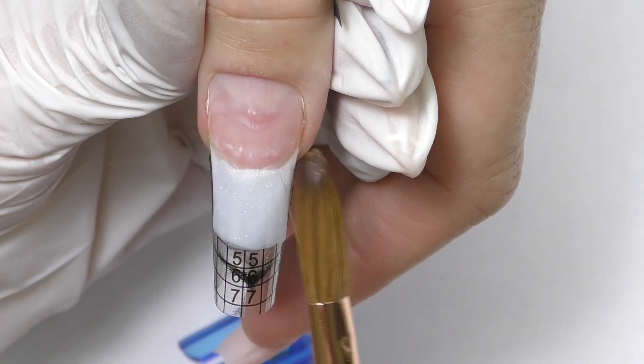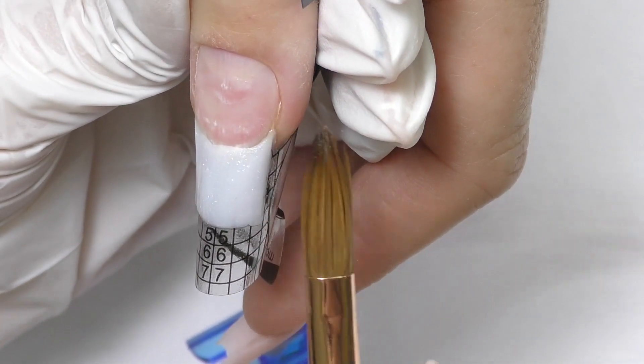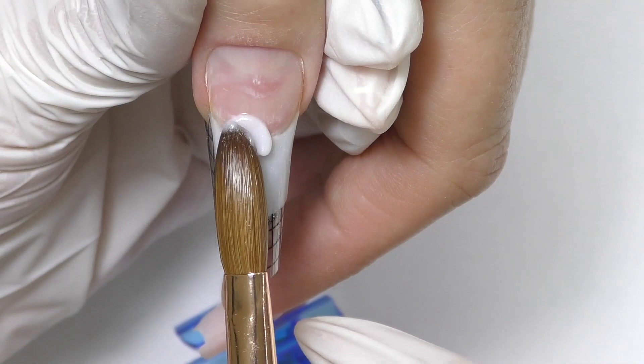In this case you won't need to file a lot and only when you're happy with the length, with the shape, with the side walls, only at this point we can continue.